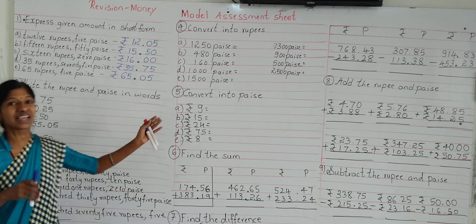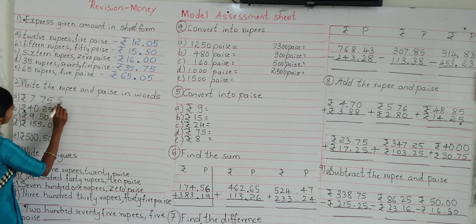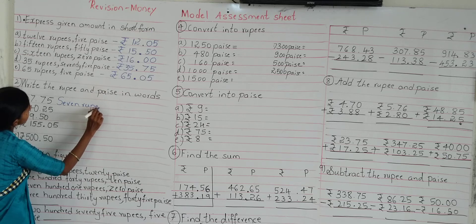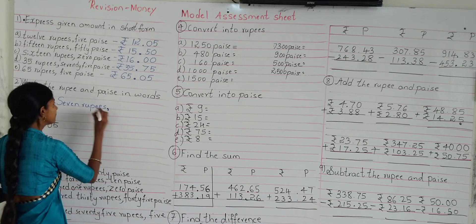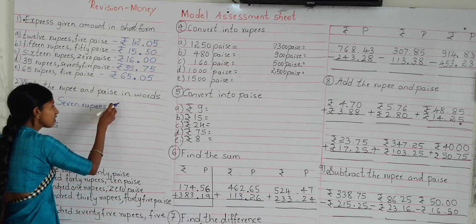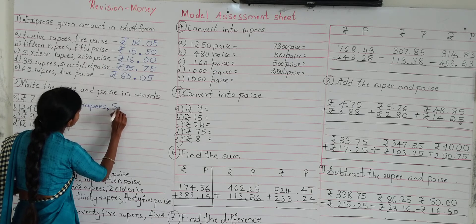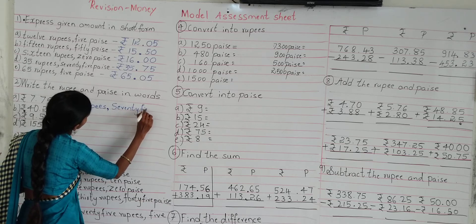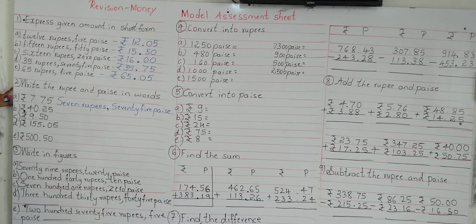Now, question 1: we have to express the given amount in words. Look at the first one: rupees 7 and 75 paisa. So 7 rupees — after writing rupees you can insert a comma to separate rupees and paisa, or you can use the word 'and.' So 7 rupees and 75 paisa. Instead of using 'and' we will insert a comma: 7 rupees, 75 paisa.